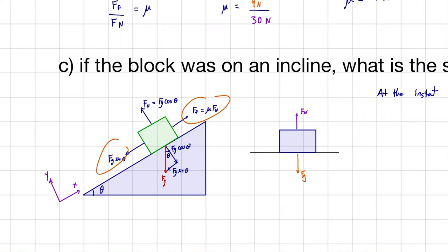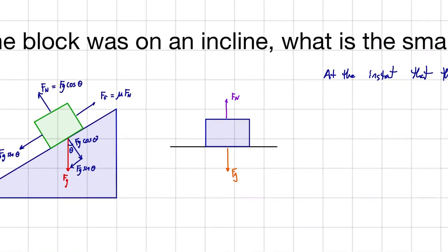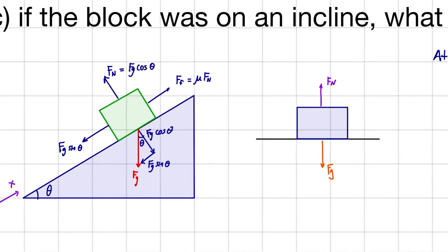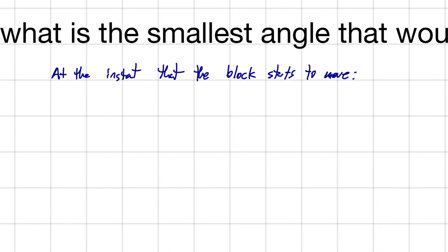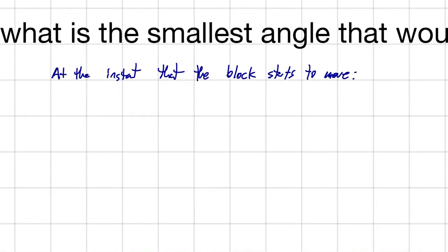All of a sudden, it's going to be a critical point for us, and that's going to be the time at which our block starts to slide down the ramp. So I'm going to write this out like this: mu times Fg cos theta is equal to Fg sin theta.